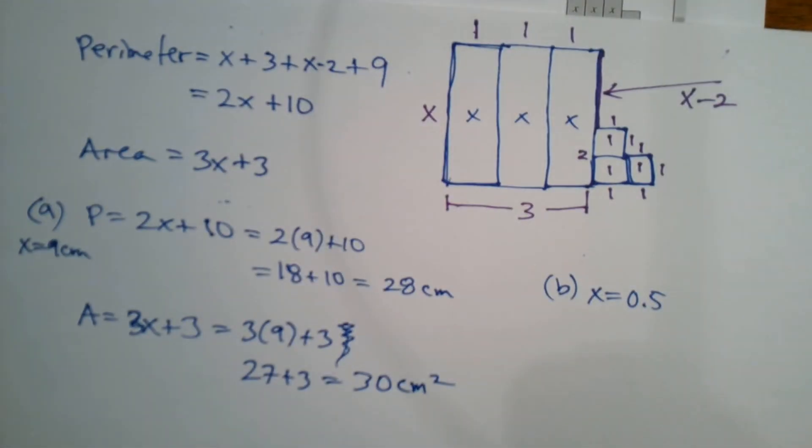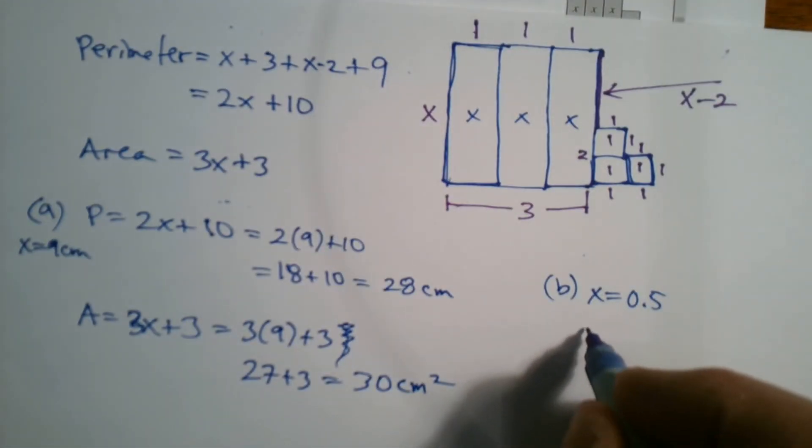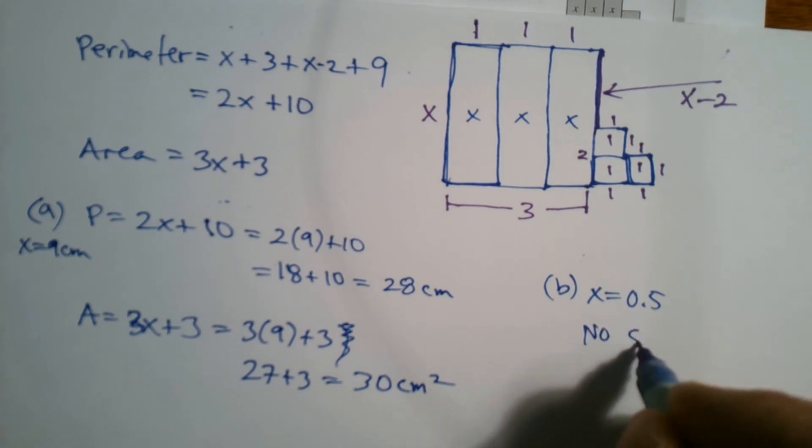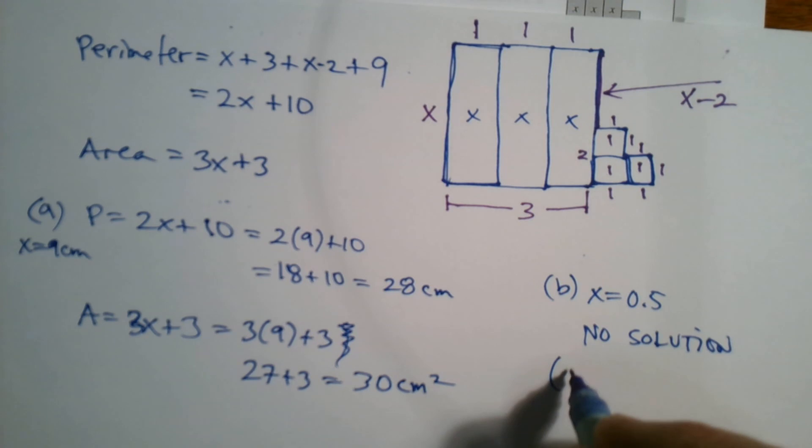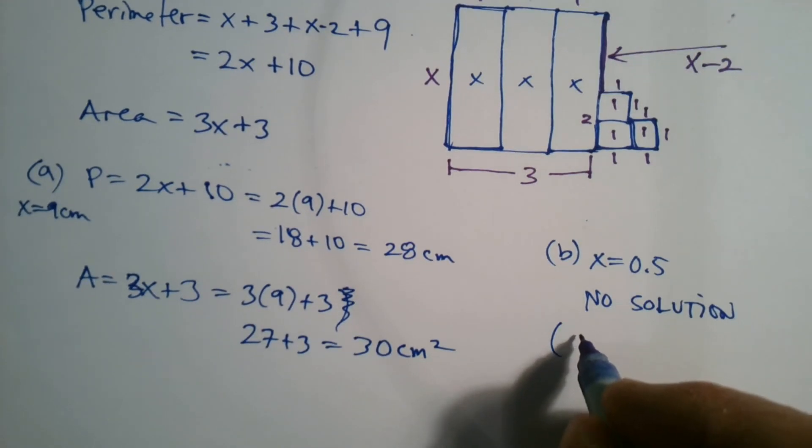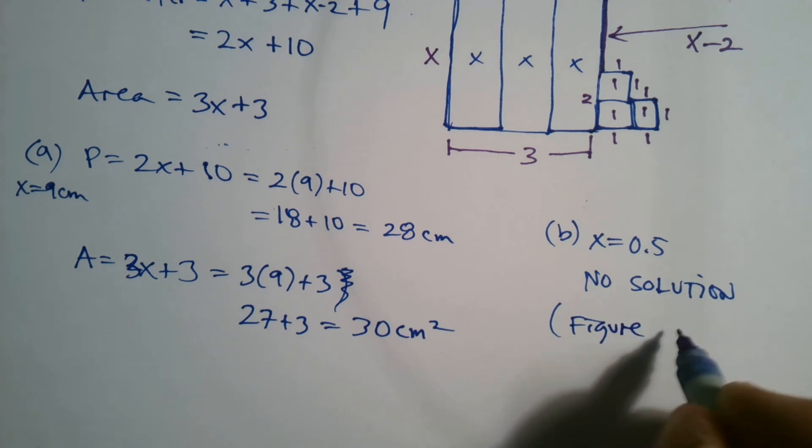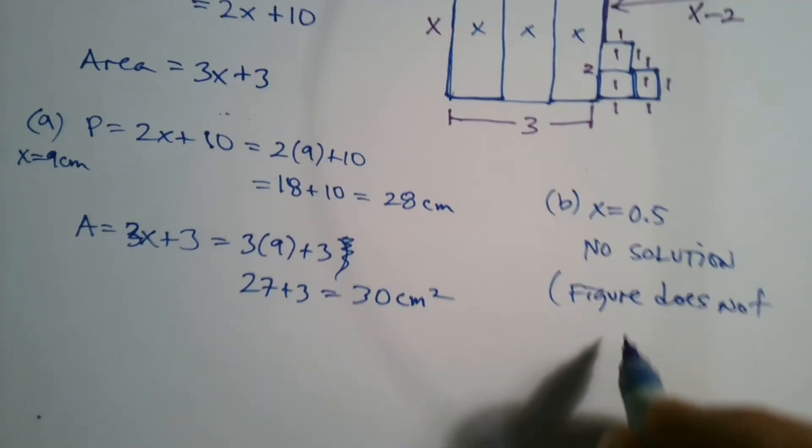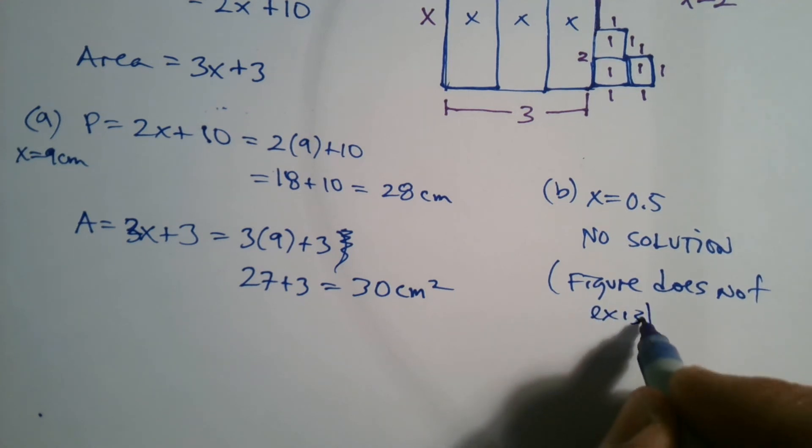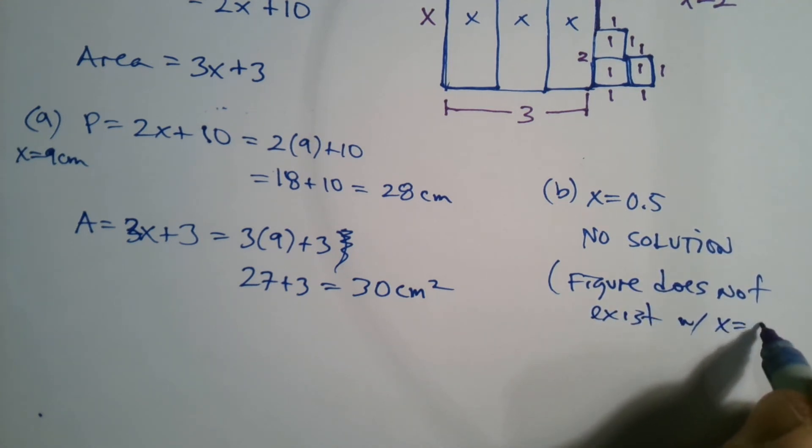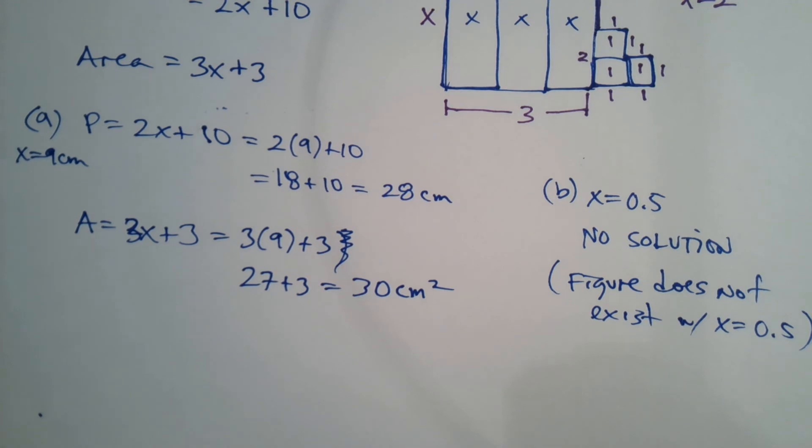So for B, I'm just going to write no solution. And then I'll just say figure does not exist with X equals 0.5. Okay? All right.